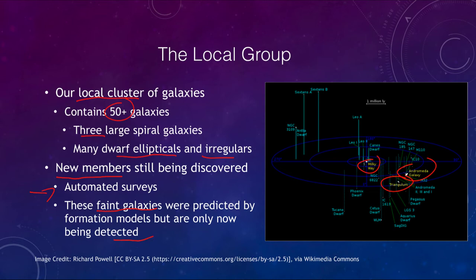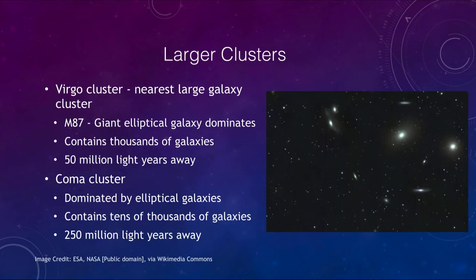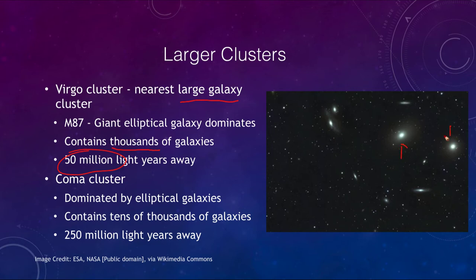We can have much larger clusters than our local group. The Virgo cluster is the nearest large galaxy cluster, about 50 million light years away. Unlike our local group with about 50 galaxies, the Virgo cluster has thousands of galaxies. When we look at images of it, almost every object visible — including small dots — is a galaxy that is part of this cluster.